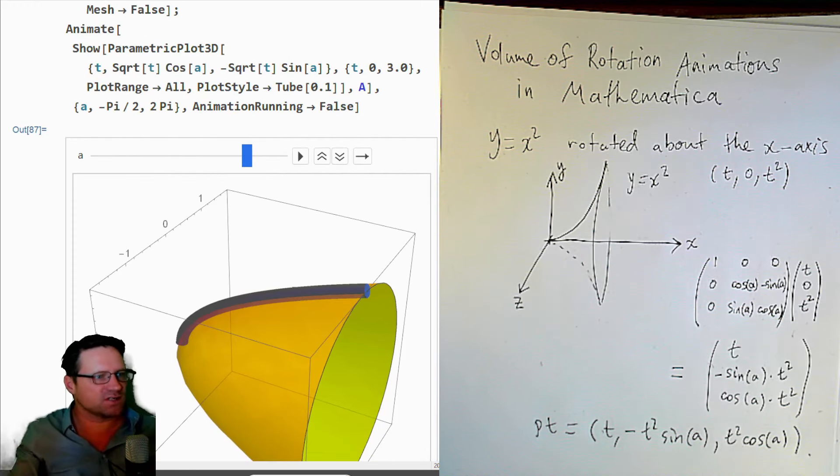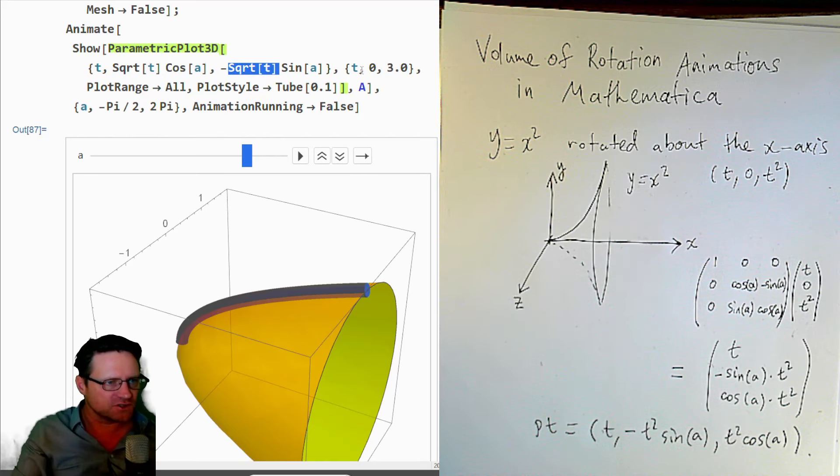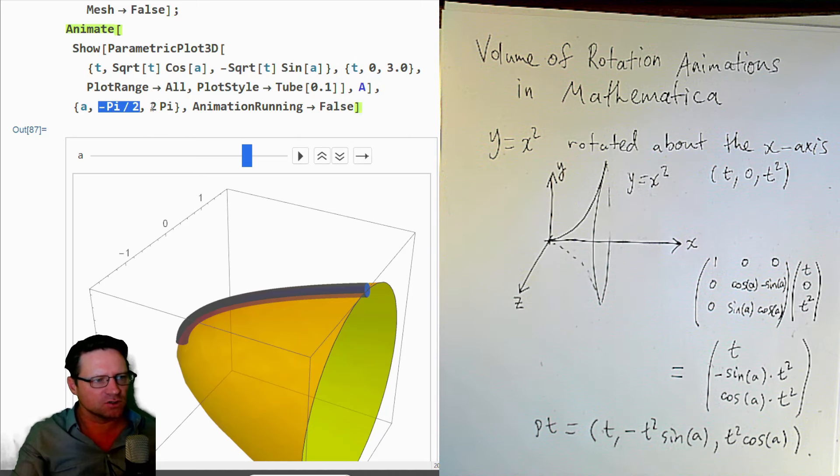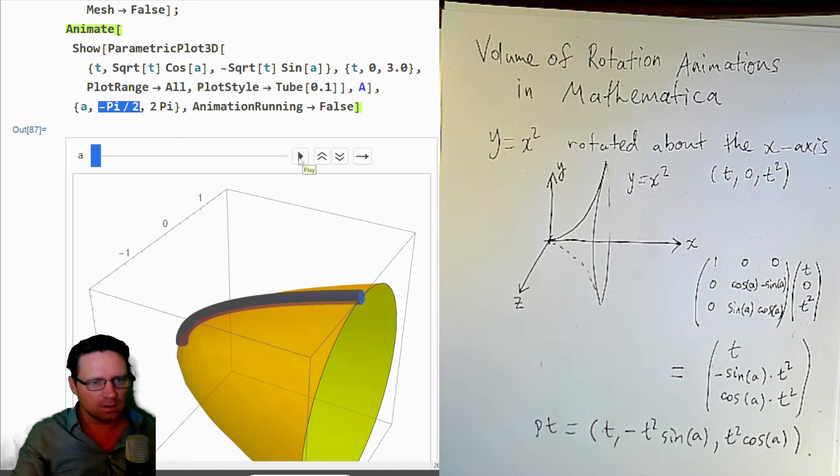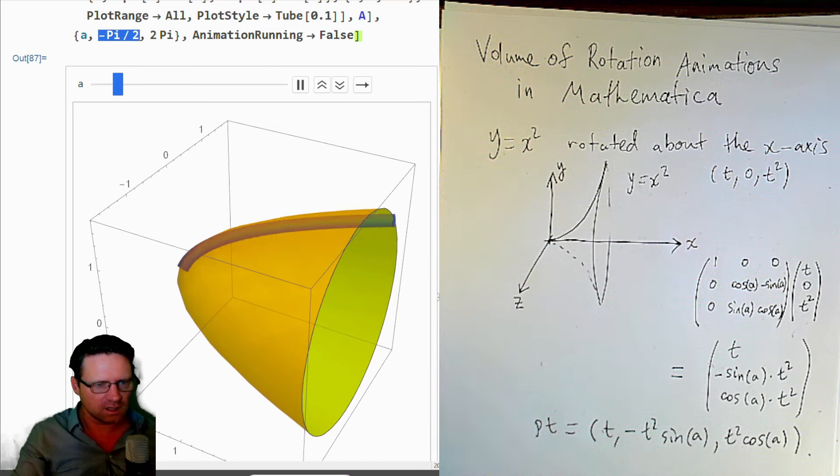Okay, I see. So what I've done is I've changed the t squared there to the square root of t so that it rotates around the correct way. And same thing here. And I've changed the plot range from 0 to 3 to match up with the region plot. And then changed A from minus pi over 2 to 2 pi. Let's run this. And you can see this spins around the right way. And I'm fairly happy with that, although I think I want to change some colors.